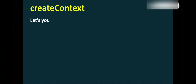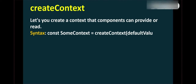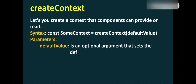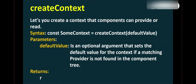The createContext function lets you create a context that components can provide or read. It takes one parameter — the default value — which is an optional argument that sets the default value for the context if no matching provider is found in the component tree. It returns a context object.